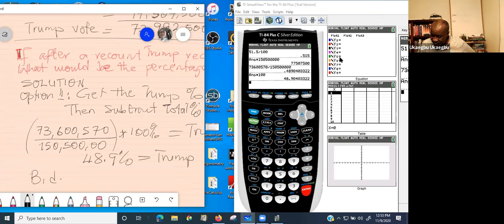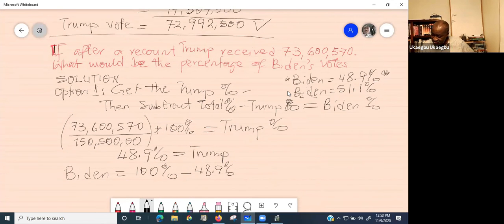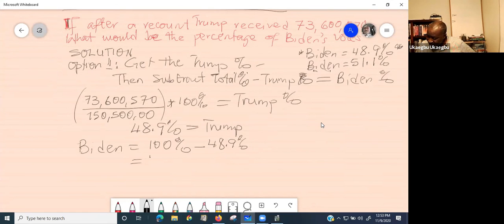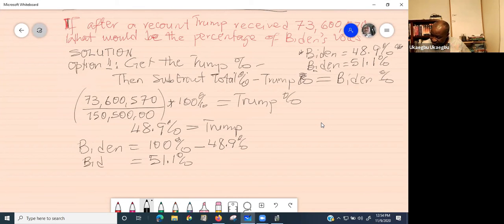For Biden: 100% minus 48.9%. Somebody said 51.1%. Is that correct? 100 minus 48.9%, that's correct. Thank you.